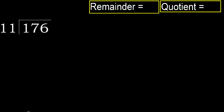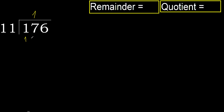176 divided by 11. 1 is less, therefore next, 17 is not less. With 17, 11 multiplied by which number is nearest to 17 but not greater? 11 multiplied by 2 is 22 — 22 is greater. 11 multiplied by 1 is 11, not greater, ok. Subtract: 17 minus 11 is 6. Next.